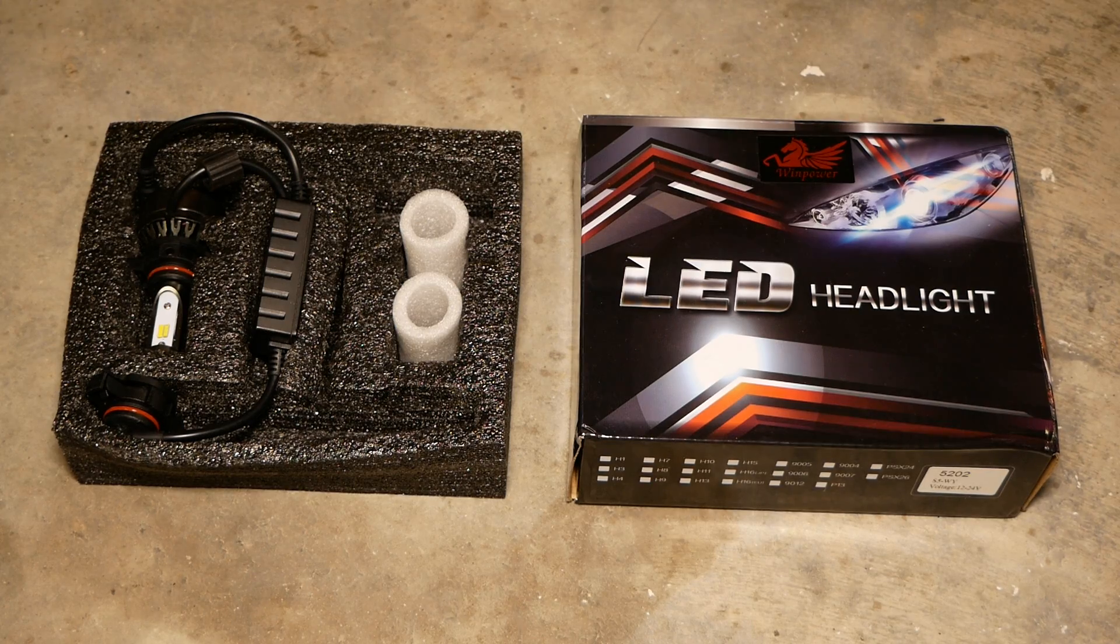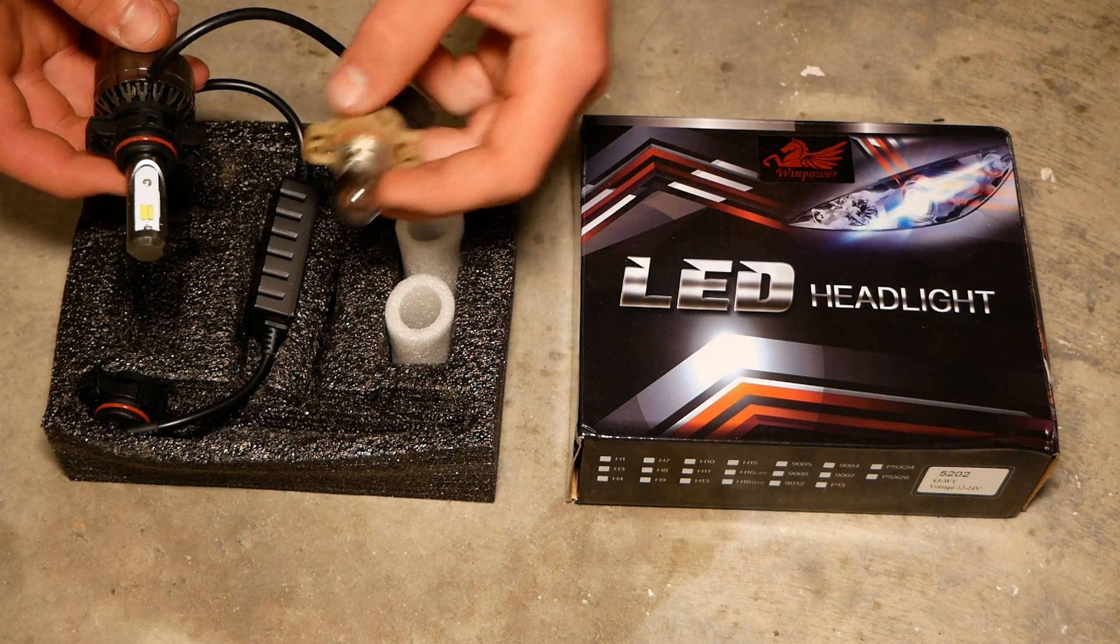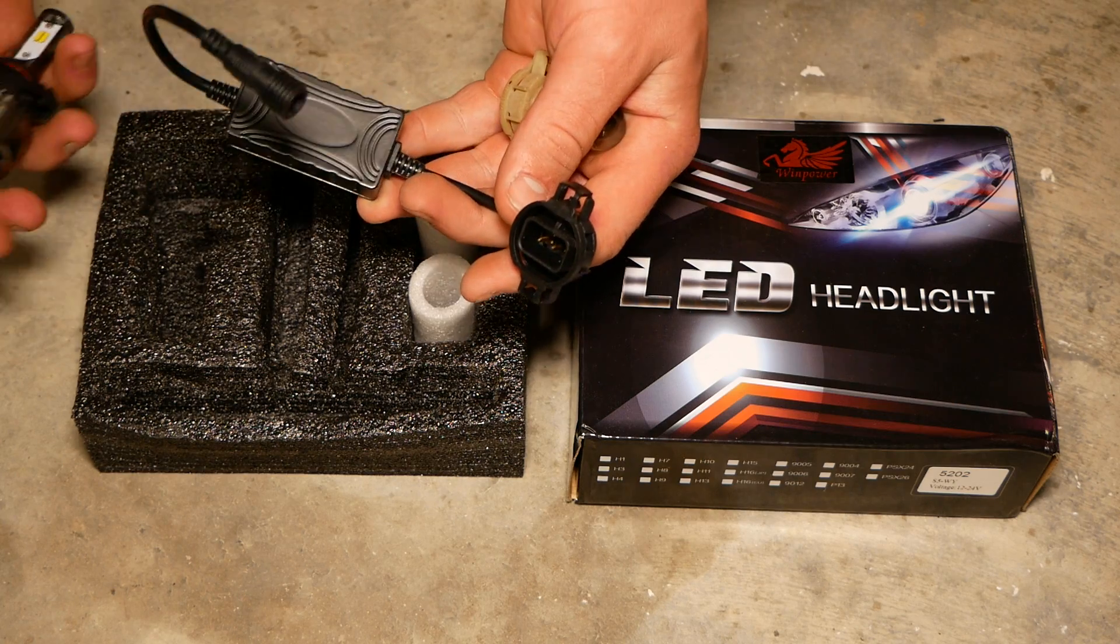As you can see our new bulb from Wind Power is much more substantial than the stock halogen bulb. It has a cooling fan and a separate power ballast to power the unit.